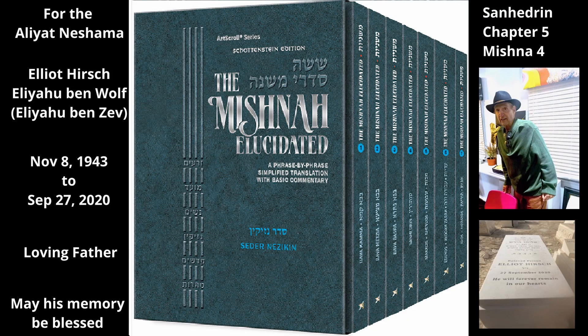Chapter 5, Mishnah 4. The Mishnah returns to its description of the procedure for capital crimes. After this — i.e., after the judges question the first witness as described in Mishnah 1 — they bring in the second witness and examine him with the same questions.